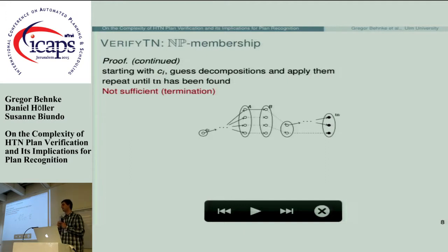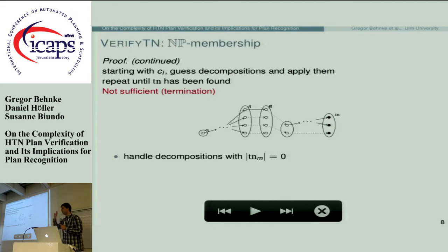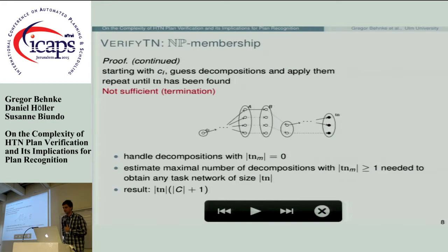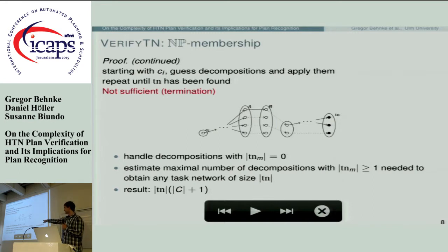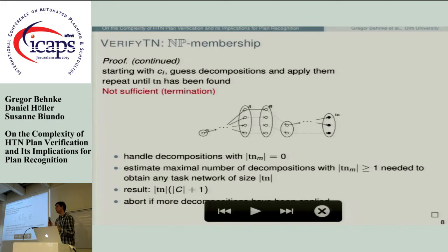We don't know how many renaming methods — those that simply replace one compound task with another — we may need to execute to reach the solution. We handled deleting decomposition methods in a clever way, details of which are in the paper. The key result is that the maximum number of decomposition methods needed to reach any task network of the size of the input is polynomial — specifically, the size of the target task network times the number of compound tasks plus one. We then abort the search if too many methods have been applied.